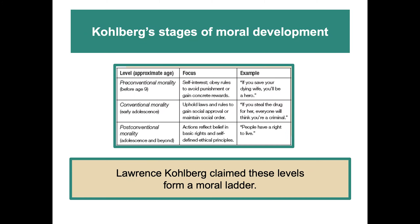The pre-conventional stage is before about age nine, and the focus is self-interest — obeying rules, avoiding punishment, gaining rewards. For example, someone in this stage would say, 'If you save your dying wife, you'll be a hero.' Conventional morality applies to most people in early adolescence; the focus is upholding laws and rules to gain social approval or maintain social order. For example, 'If you steal the drug for her, everyone will think you're a criminal.' The final post-conventional stage — adolescence and beyond — focuses on actions that reflect belief in basic rights and self-defined ethical principles. For example, 'People have a right to live.' Kohlberg claimed that these levels form a moral ladder.